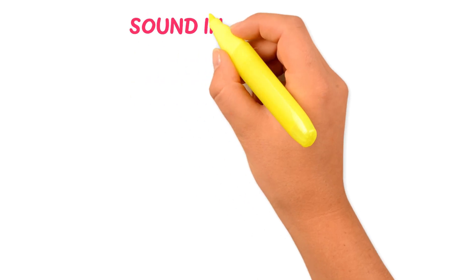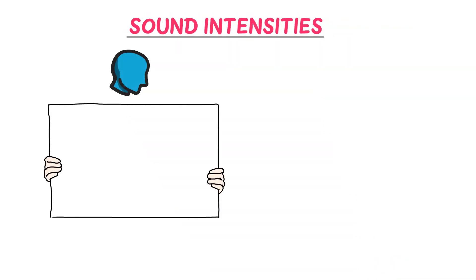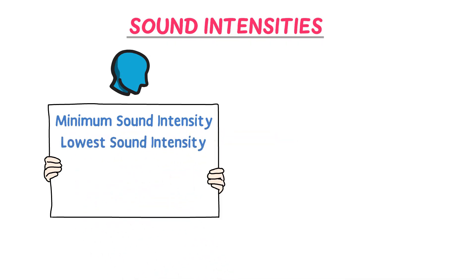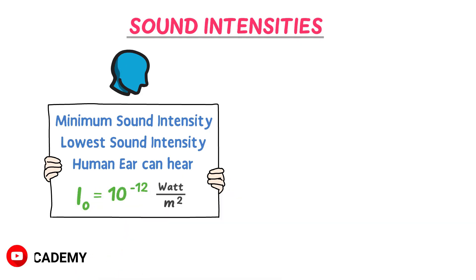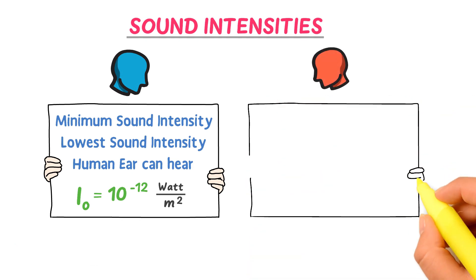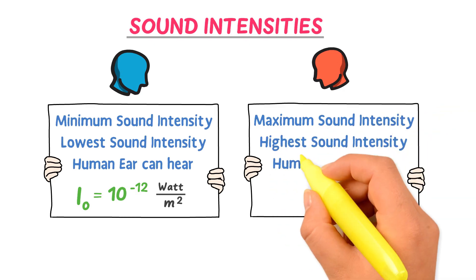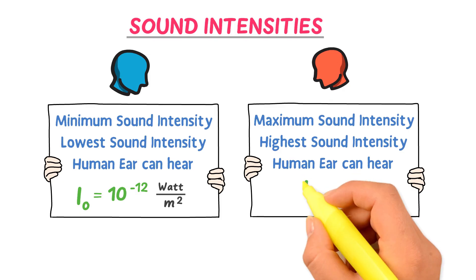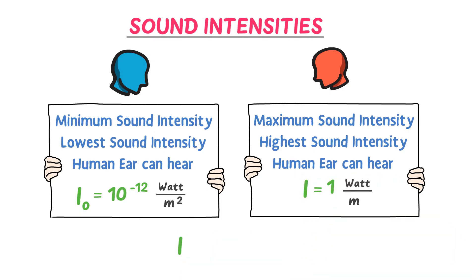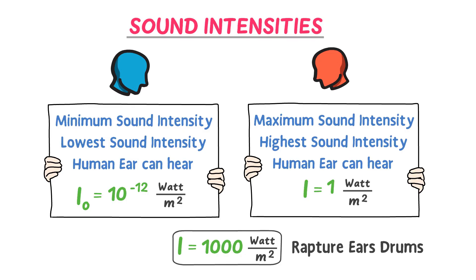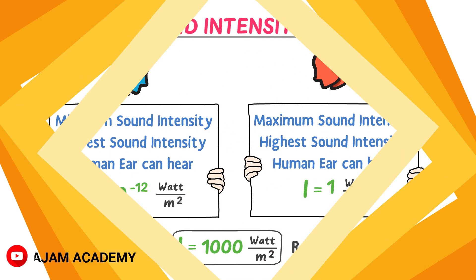Finally, let me teach you about different intensity levels. The minimum sound intensity that the human ear can hear or detect is I₀ equals 10 to the power of negative 12 watt per meter squared. The maximum sound intensity the human ear can hear or detect is 1 watt per meter squared. The sound intensity of 1000 watt per meter squared can rupture or destroy your eardrums. This was all about sound intensity.